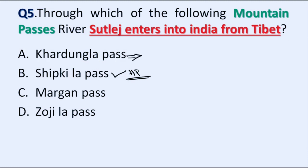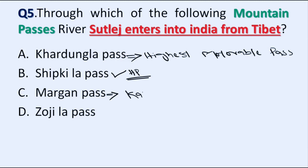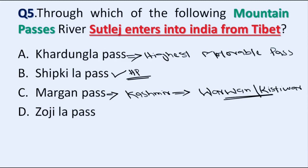Khardung La Pass is the highest motorable pass in the world. Morgan Pass connects the Kashmir Valley. Zoji La Pass lies on the Srinagar–Leh highway.